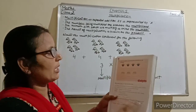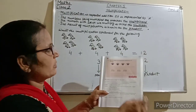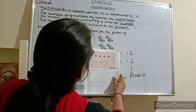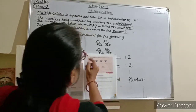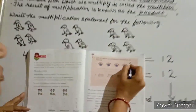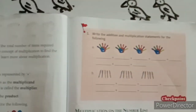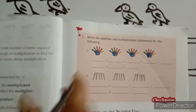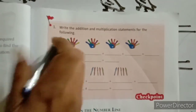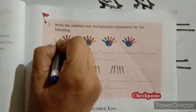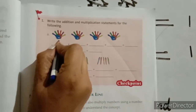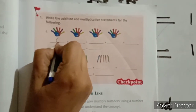Students, take out your book and do checkpoint 1. Write the addition and multiplication statements for the following. How many keys are there? 1, 2, 3, 4, 5, 6 — so here we will write 6.